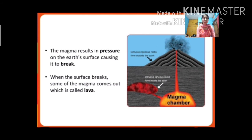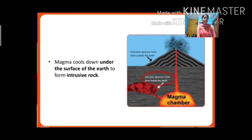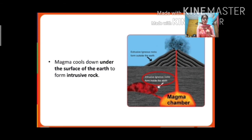When the surface breaks, some of the magma comes out, which is called lava. The lava cools down outside the earth to form extrusive igneous rocks. The magma that cools down under the surface of the earth forms intrusive igneous rocks.